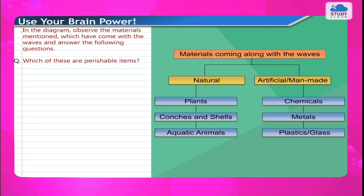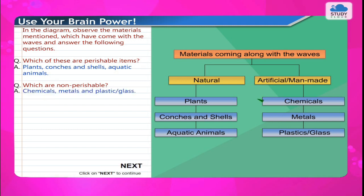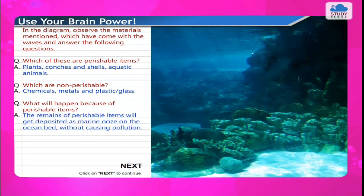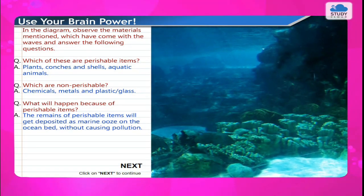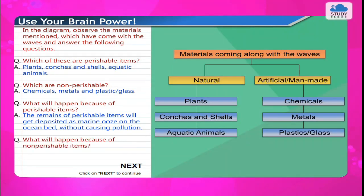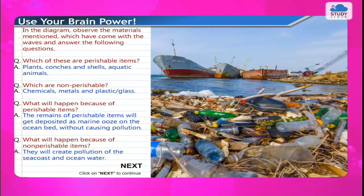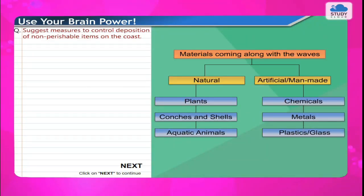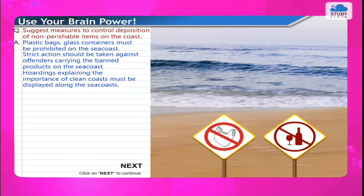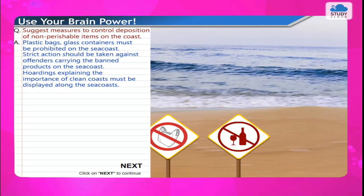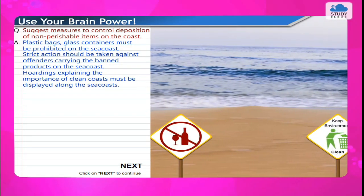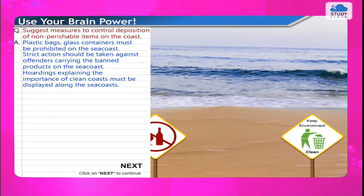Perishable items brought by waves include plants, conches and shells, and aquatic animals. Non-perishable items include chemicals, metals, plastic, and glass. The remains of perishable items will get deposited as marine ooze on the ocean bed without causing pollution, while non-perishable items will create pollution of the sea coast and ocean water. To control deposition of non-perishable items, plastic bags and glass containers must be prohibited on the sea coast, and strict action should be taken against offenders carrying banned products.